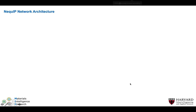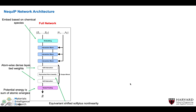Looking at the NEQUIP network architecture: we start by embedding atoms based on chemical species, then pass these embeddings through a series of interaction blocks where atomic features are iteratively refined. The output passes through atom-wise dense layers, an equivariant non-linearity, another dense layer, and finally the potential energy is computed as a sum over atomic energies. Forces are computed as the negative gradient of the predicted energy with respect to atomic positions via automatic differentiation.